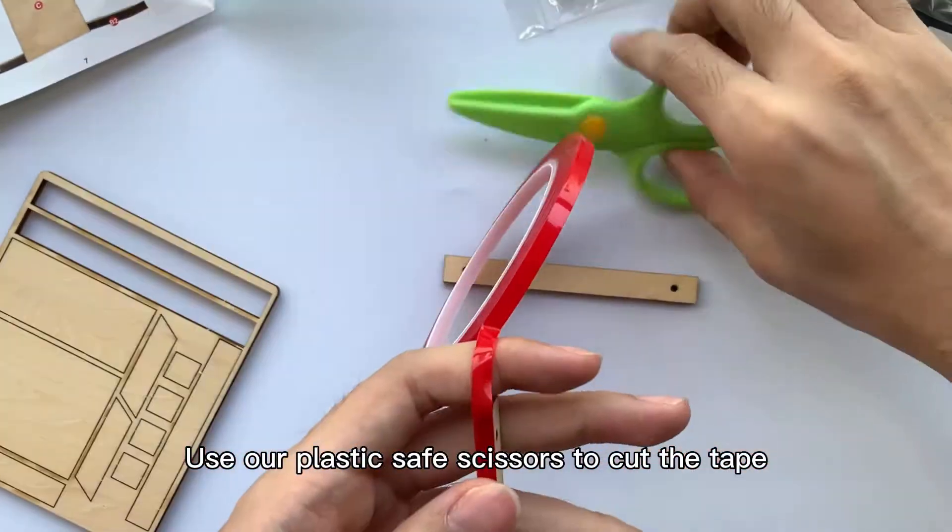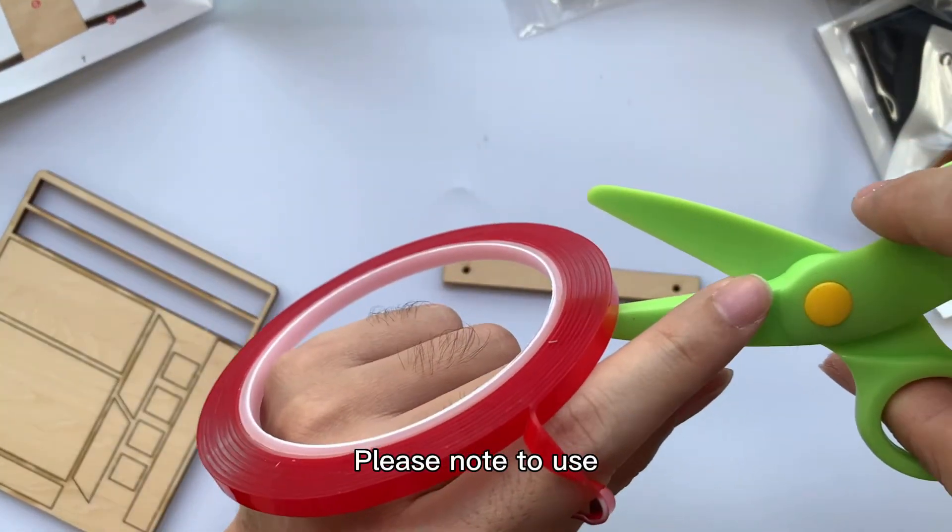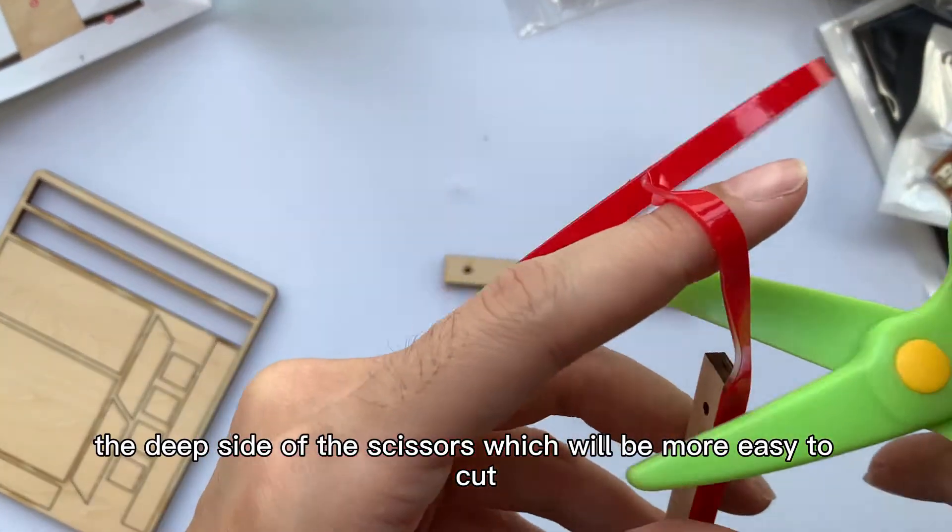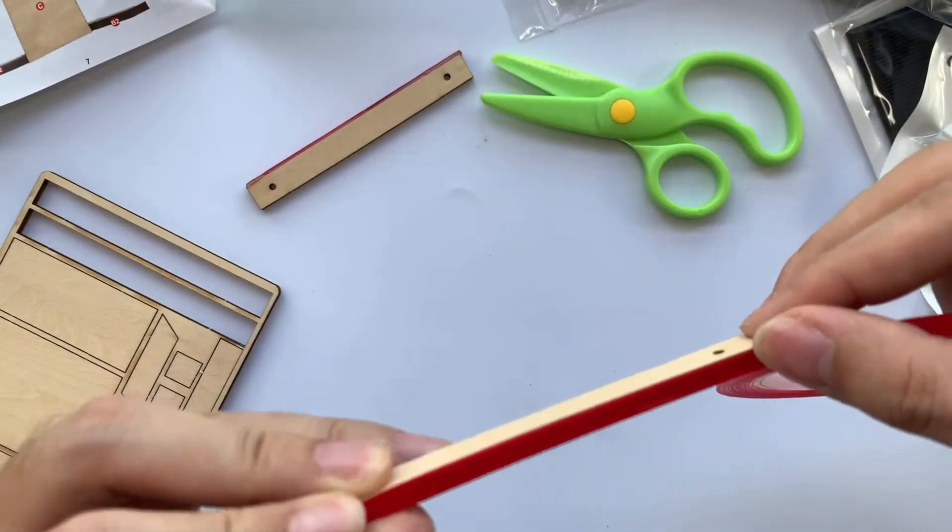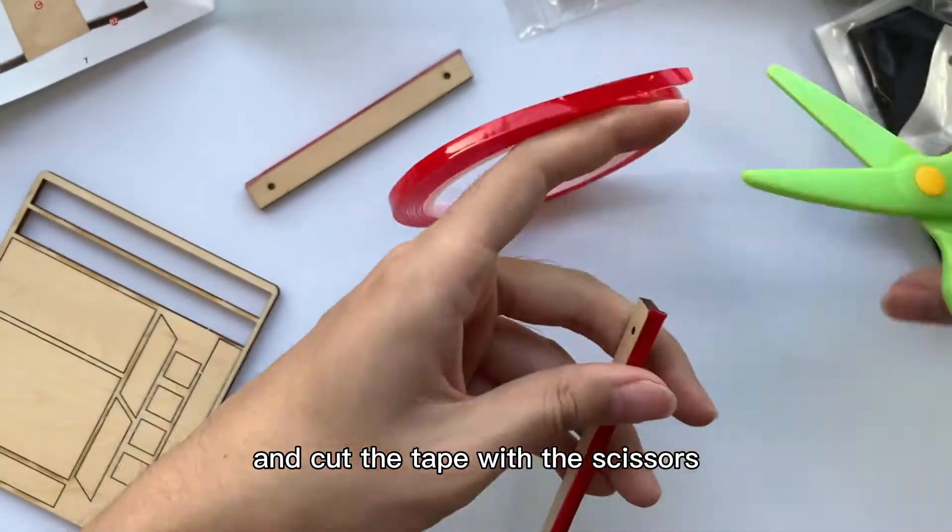Use our plastic-safe scissors to cut the tape. Please note to use the deep side of the scissors will be more easy to cut. The same steps for the wood piece A2: apply tape on the side and cut the tape with the scissors.